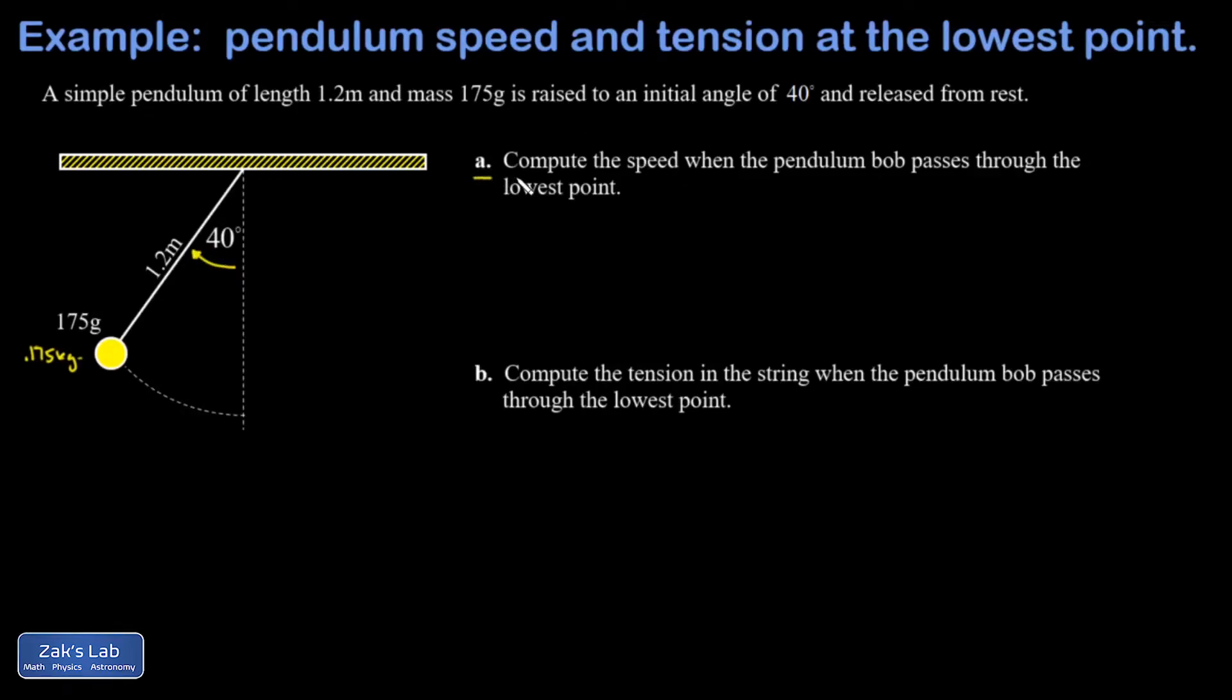And then in part a we want to get the speed of the bob at the lowest point, and that's an energy conservation question. We just look at the drop in height and convert that to kinetic energy. And then in part b we want to get the tension in the string when the pendulum moves through its lowest point, and that's a uniform circular motion problem using the speed that we got in part a.